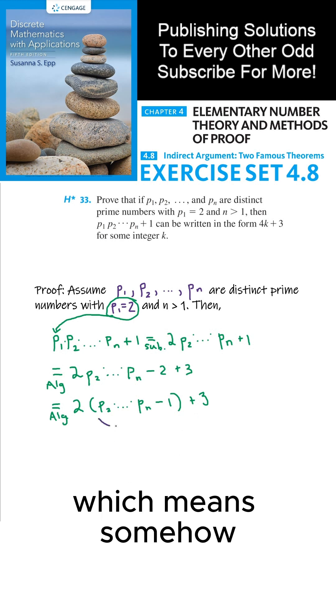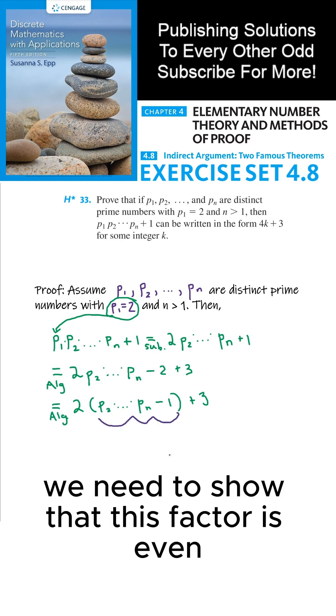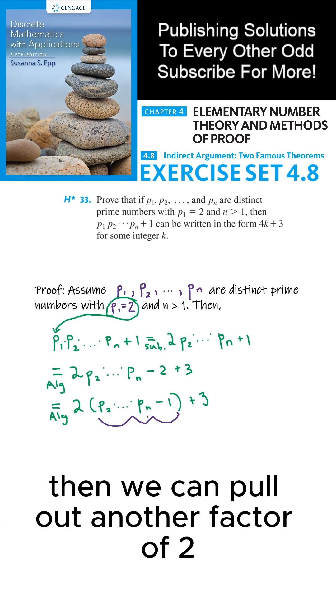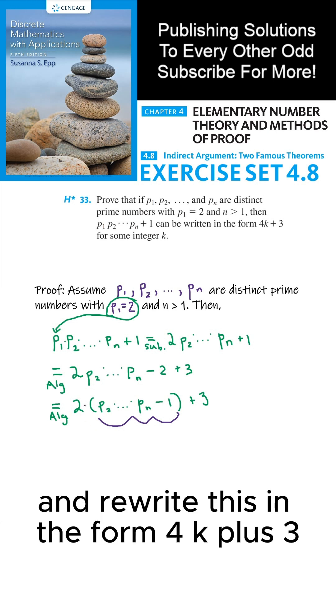Which means somehow we need to show that this factor is even. If this factor here is even, then we can pull out another factor of 2 and rewrite this in the form 4k plus 3.